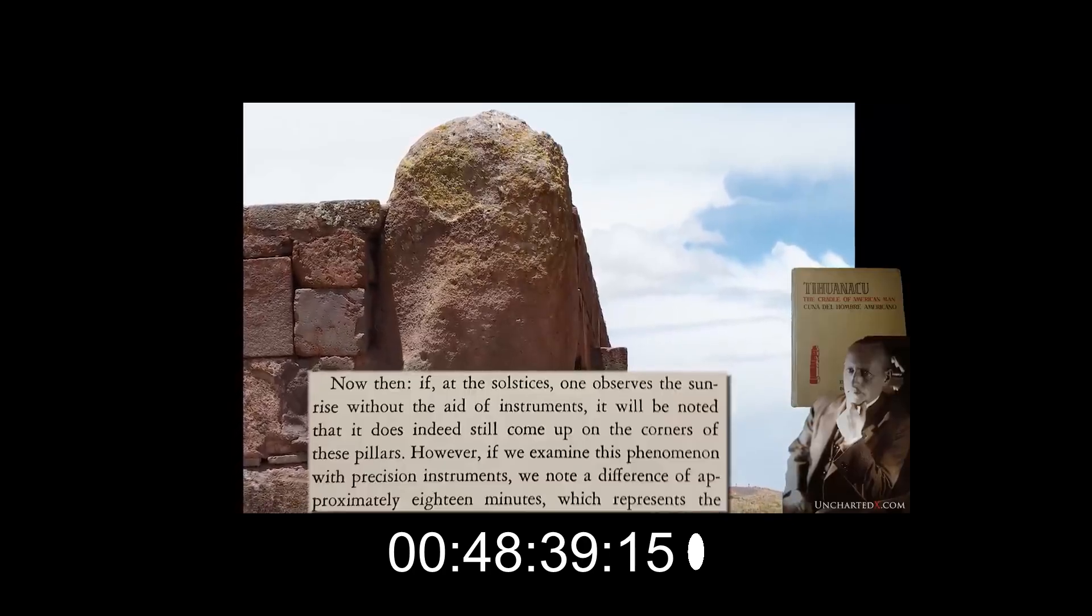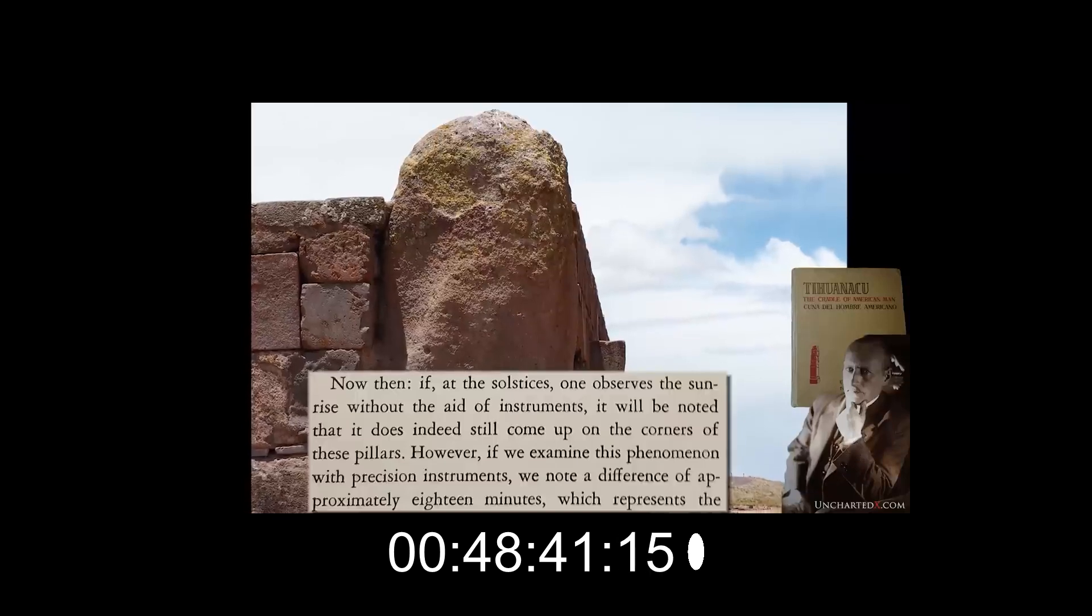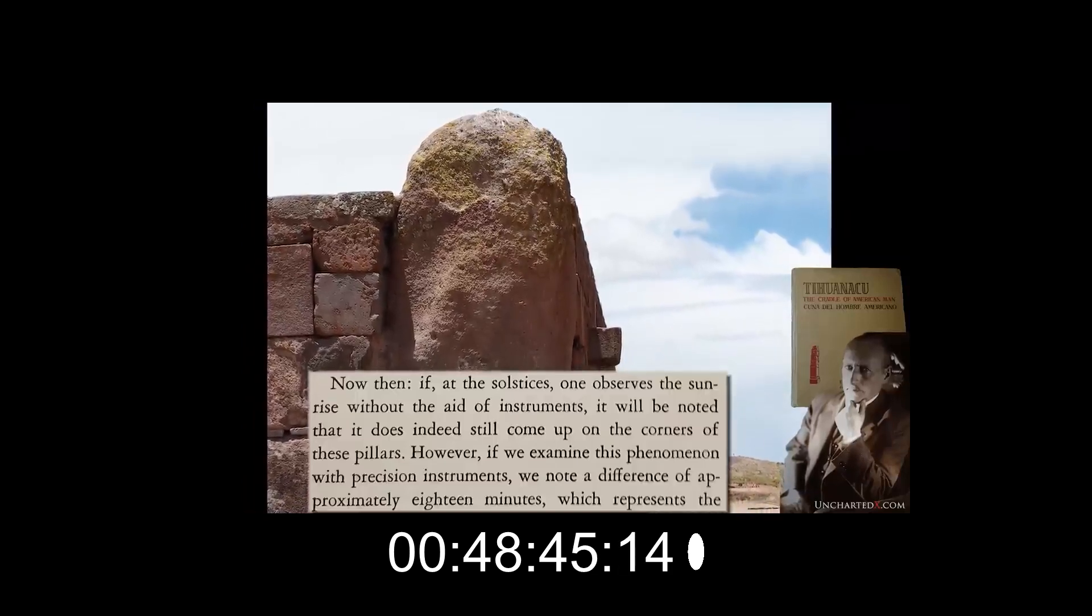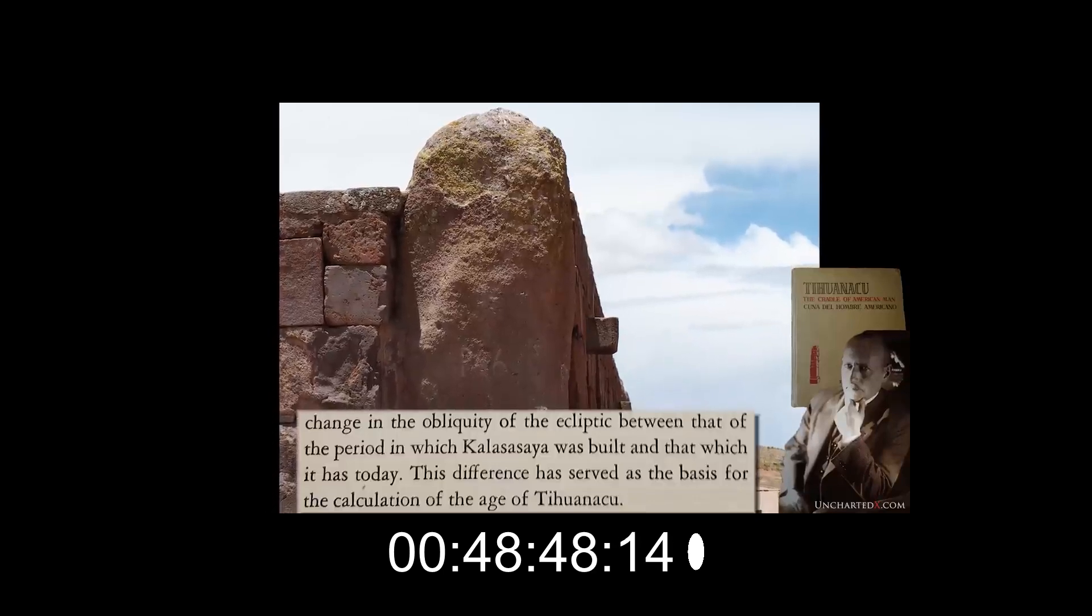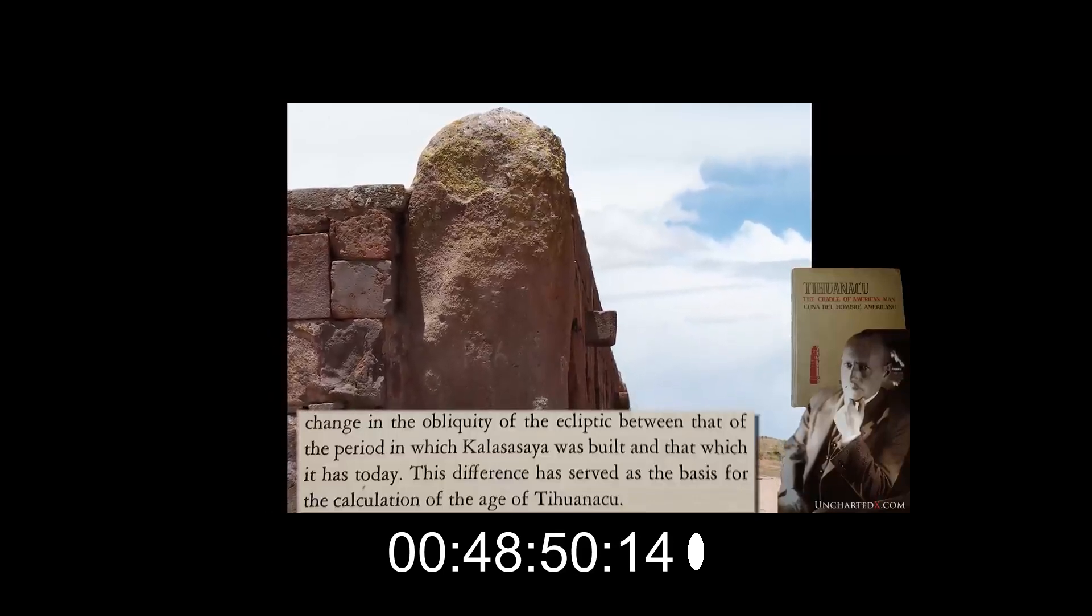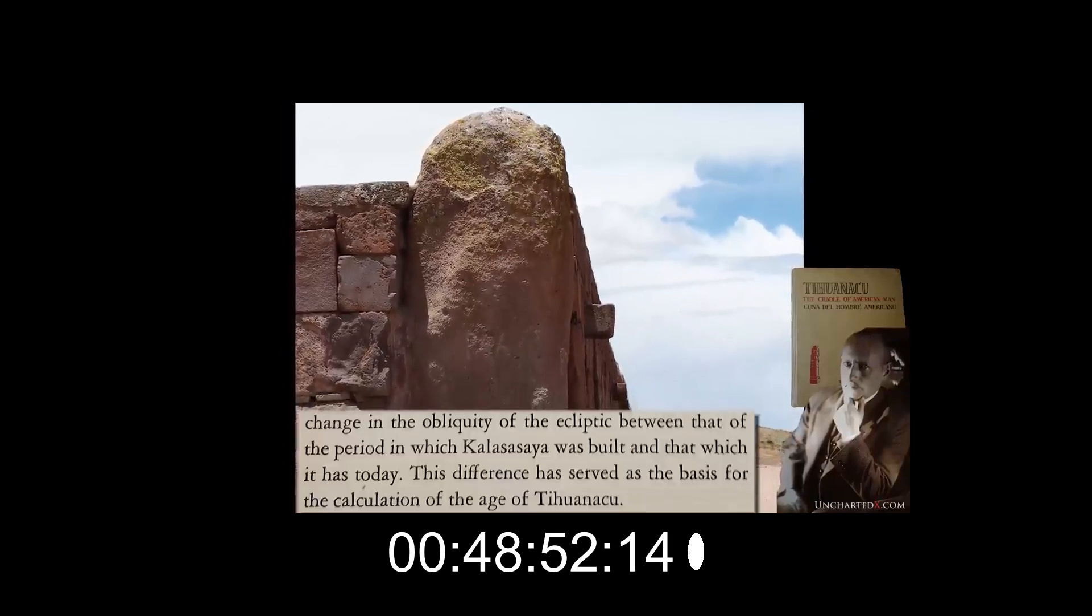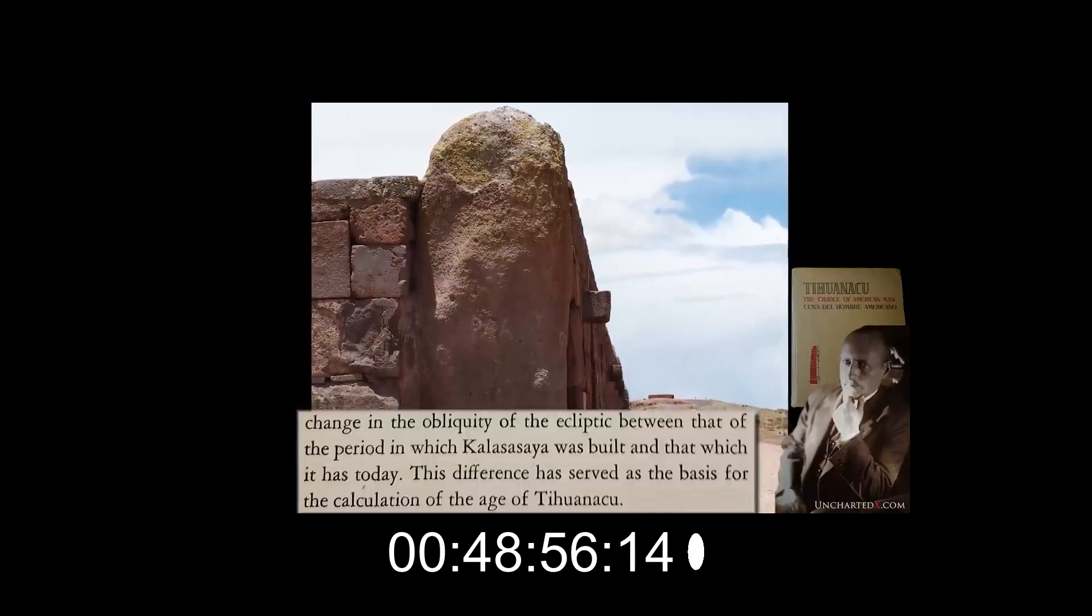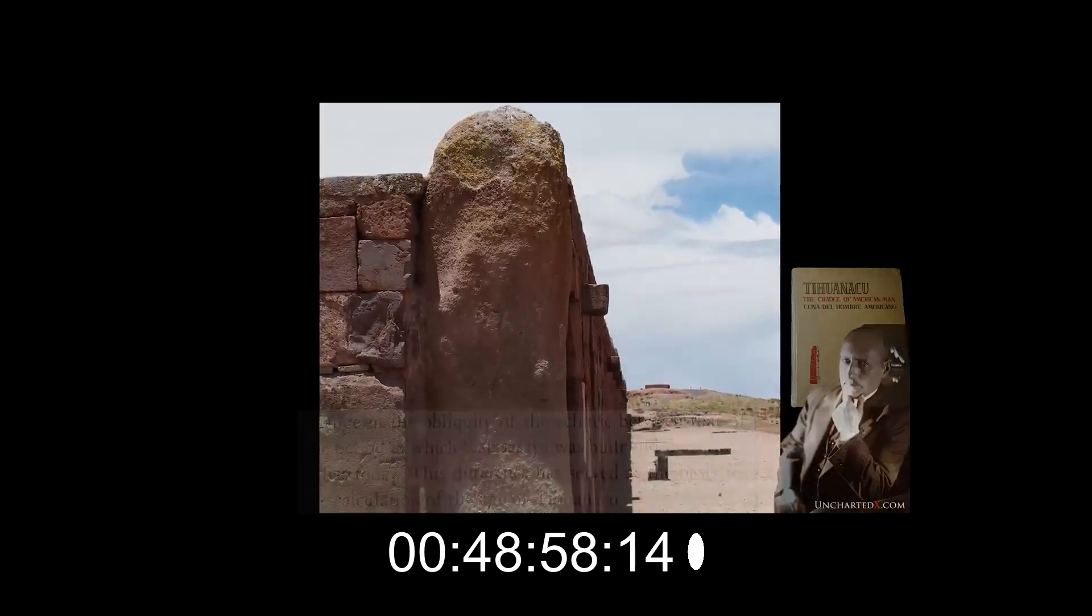If we examine this phenomenon with precision instruments, we note a difference of approximately 18 minutes, which represents the change in the obliquity of the ecliptic between that of the period in which Kalasasaya was built and that which it has today. This difference has served as the basis for the calculation of the age of Tiwanaku.